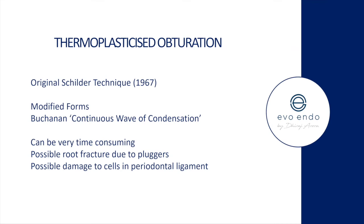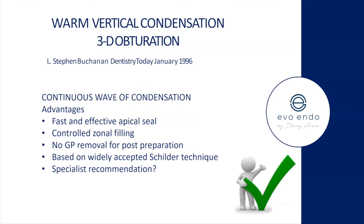It's possible to cause micro cracks within the root canal system that you wouldn't see and that may lead to failure further down the line. Possible damage to periodontal ligament cells — the tip can get heated to 200 degrees, so you only want to activate it for as long as necessary, not keep your finger on the trigger as long as possible. Advantages of warm vertical or continuous wave condensation: it's fast and effective with apical seal.